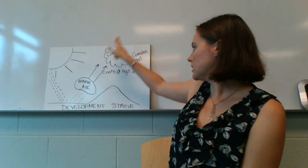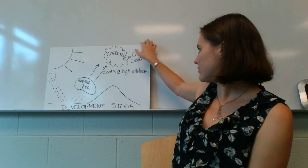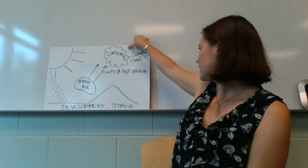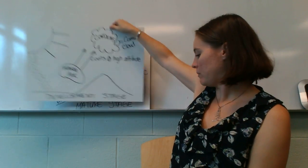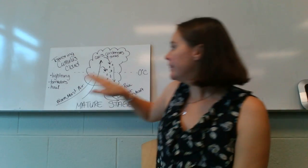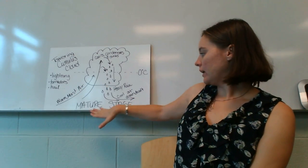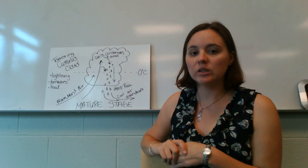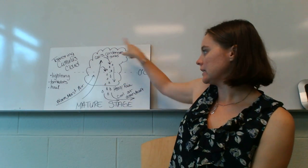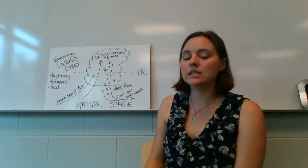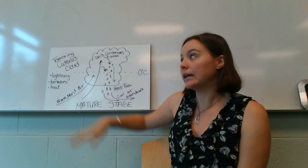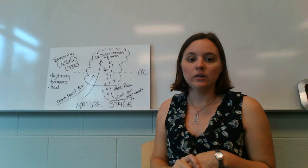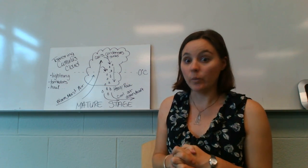Right now we have lots and lots of updrafts of warm moist air. Then we have the mature stage of the thunderstorm, where we have a towering cumulus cloud — it's nice and tall. This is the stage where we're going to get lightning, tornadoes, hail, and other severe things like really strong winds.